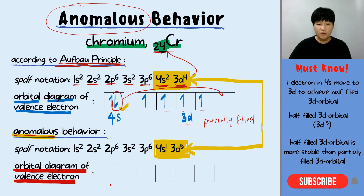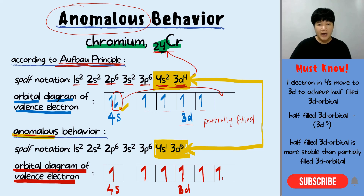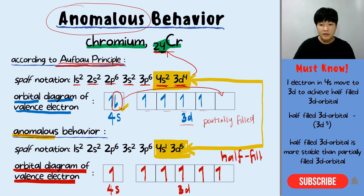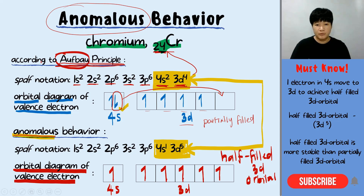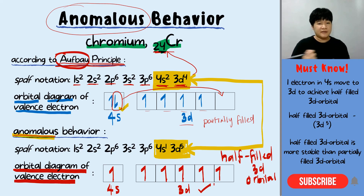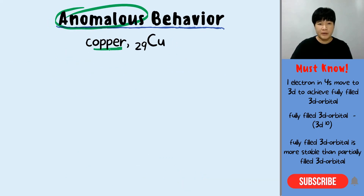The orbital diagram of the valence electrons in the anomalous behavior shows the 4s only has one electron left, but the 3d now has five. According to Hund's rule, the five electrons are arranged singly first before pairing up. You can see that the 3d orbital is now a half-filled 3d orbital, and this half-filled 3d orbital gives extra stability. Therefore, chromium behaves anomalously compared to the Aufbau principle — simply because it can achieve extra stability by having a half-filled 3d orbital.